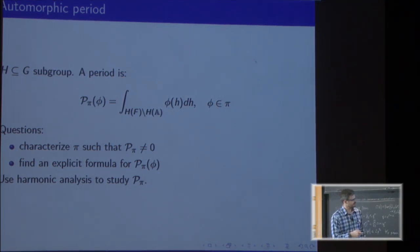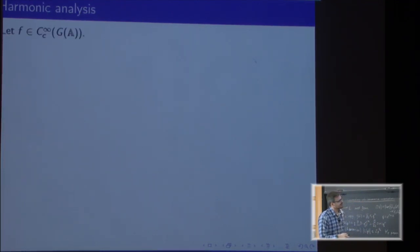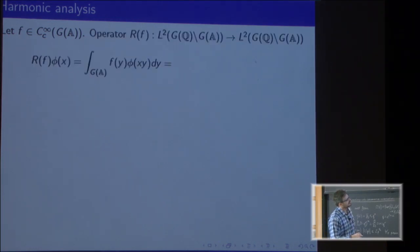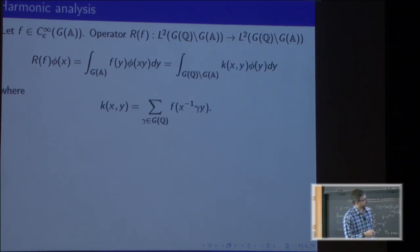What is harmonic analysis in this setting? We start with a compactly supported smooth function on this topological group G(A). By abstract construction, it defines an operator on the L² space given by convolution. But because we're quotienting out by rational points, this is actually an integral operator.